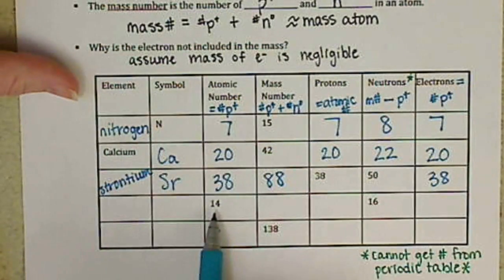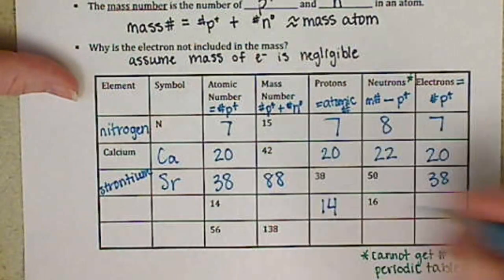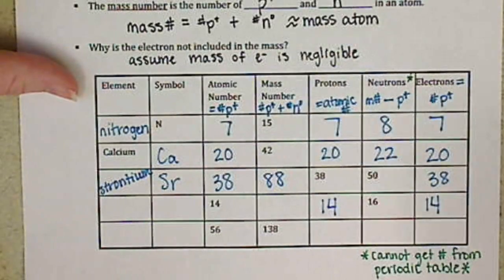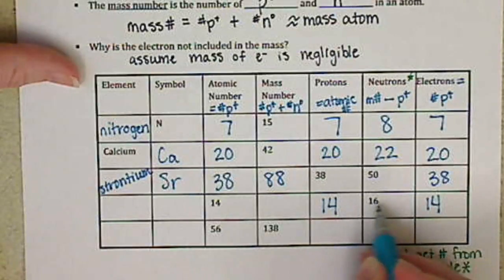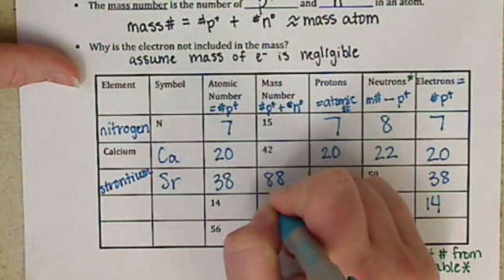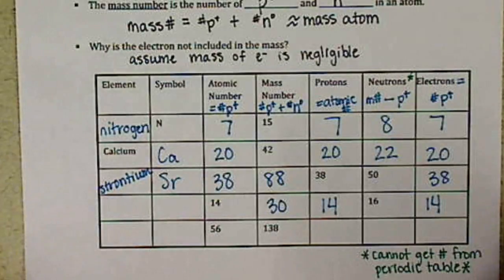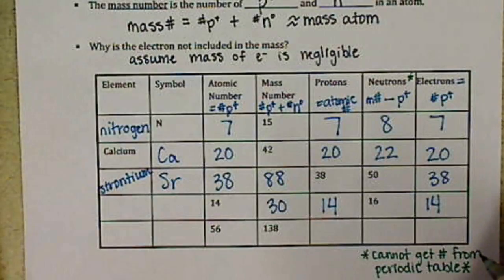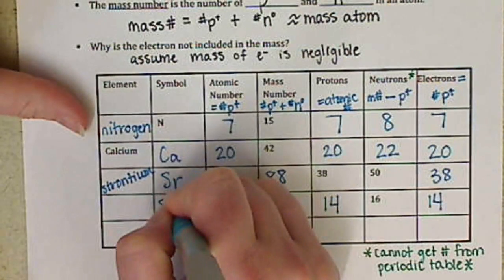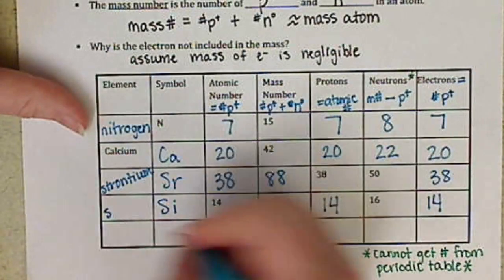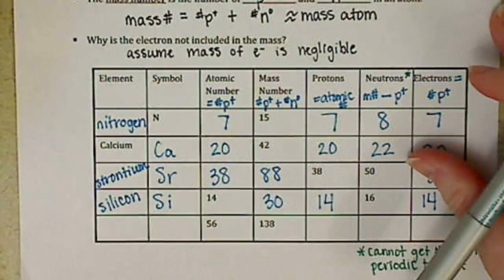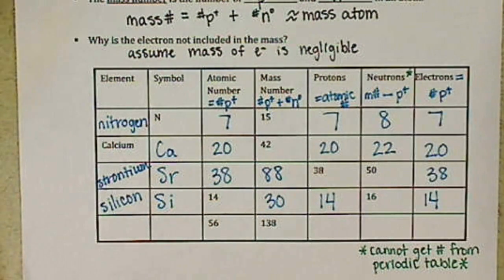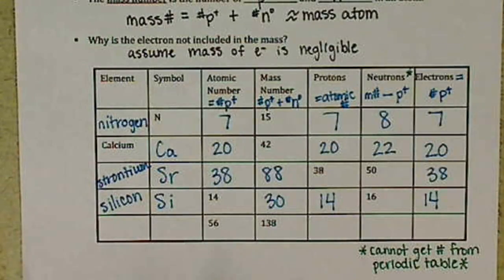Next line, atomic number of 14 means our number of protons are 14 and our number of electrons are 14. For our mass number, we add those two together and we have a mass number of 30. And silicon has an atomic number of 14.